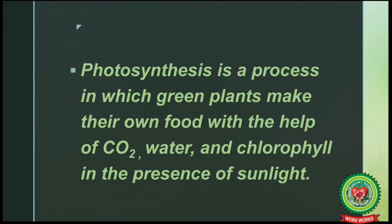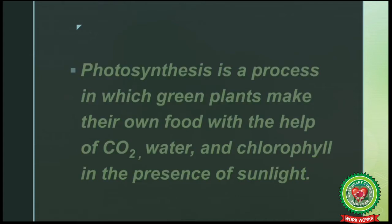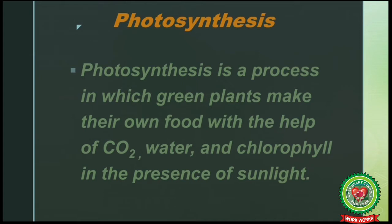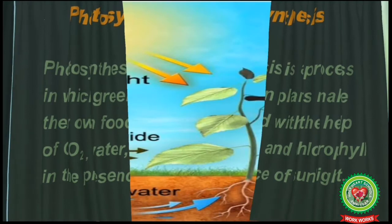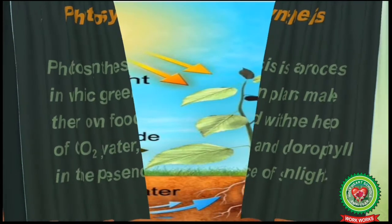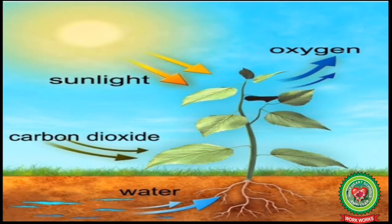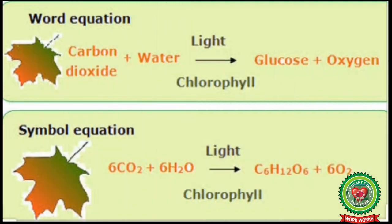What is photosynthesis? The word 'photo' means light and 'synthesis' means to prepare. Photosynthesis is defined as a process in which green plants make their own food with the help of carbon dioxide, water, and chlorophyll in the presence of sunlight. This diagram is showing the process of photosynthesis, and these reactions are also showing the process of photosynthesis.